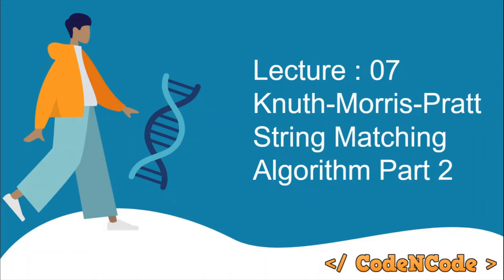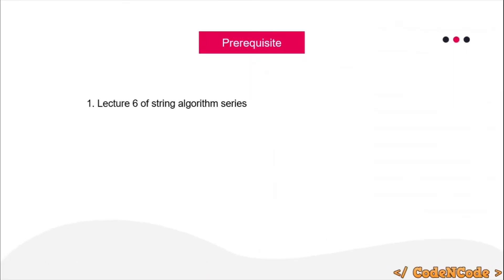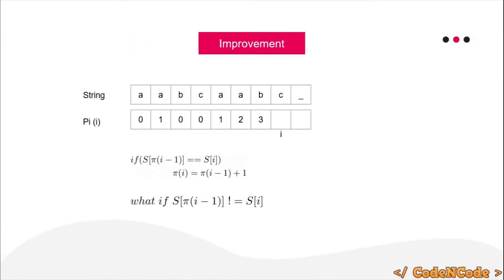Hello guys, this is Code and Code, and this is the seventh lecture of the String Algorithm series. This is part two of the KMP string matching algorithm. The prerequisite for this lecture is the sixth lecture of the String Algorithm series, since this is a continuation of the previous lecture. Make sure you've already watched lecture six before continuing.